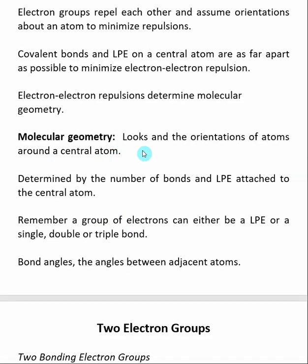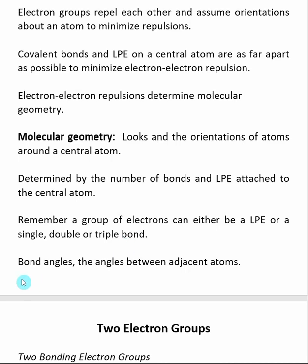Molecular geometry looks at the orientation of atoms around a central atom. We're not going to say that we can actually see the lone pair electrons — molecular geometry is determined by the number of bonds and lone pair electrons attached to the central atom. One of the main mistakes people make is thinking that a double or triple bond counts as multiple groups of electrons. A single, double, or triple bond all count as a single group of electrons. Bond angles are also determined by molecular geometry and electron-electron repulsion — they are simply the angles between adjacent atoms.